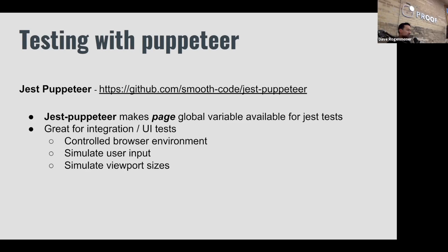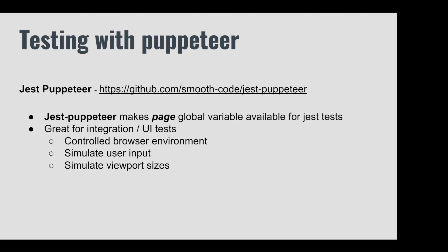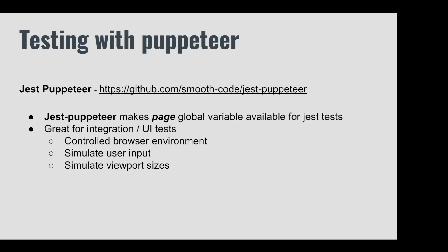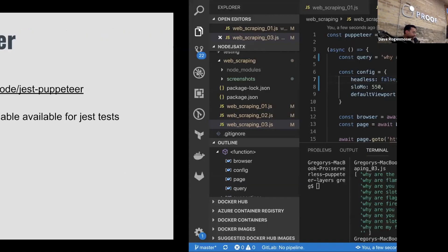So I want to talk about how to use Puppeteer with Jest. Jest is a really popular testing framework. Jest Puppeteer doesn't do anything you can't do yourself manually, but what it does is make the page global variable available so you can go ahead and do all the same stuff we just did — scrape Google, scrape Hacker News — and use that to write tests. Let's do a quick example.